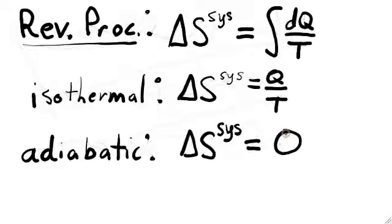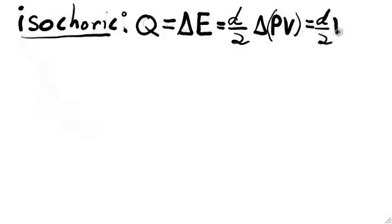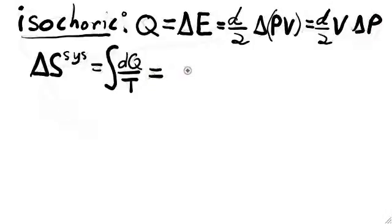For an isochoric, or constant volume process, we have to be a little more careful. Since work is equal to zero, Q is equal to delta E, which is the same as D over two, D being the number of degrees of freedom, times the change in PV. Of course, volume is constant, so the change in PV is equal to V times the change in P.